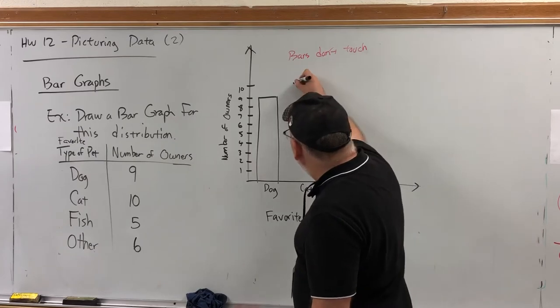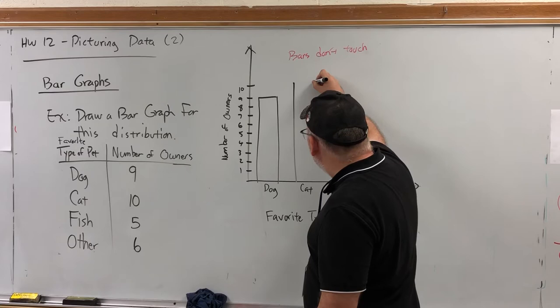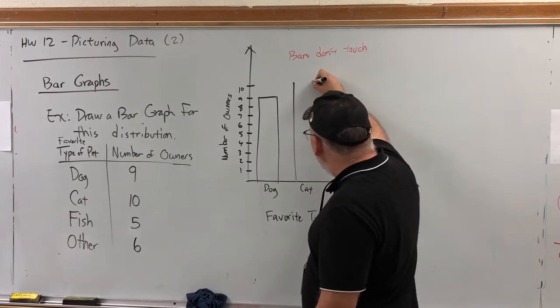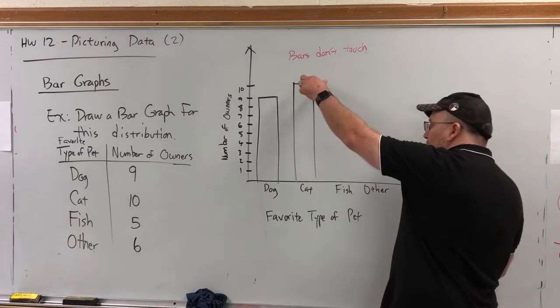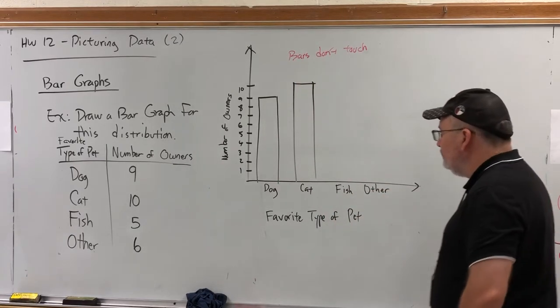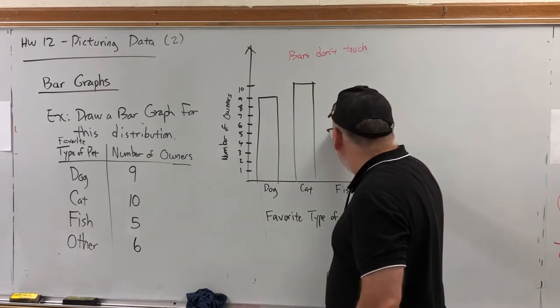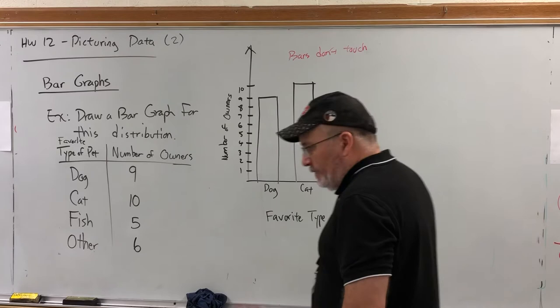Ten people said cat. And if you notice, I'm starting at the top, because it's easier than going up and figuring out where to stop drawing. I know we're going to stop drawing if I start at the top, stop when I hit the horizontal axis. Five people said fish. Six people said other.